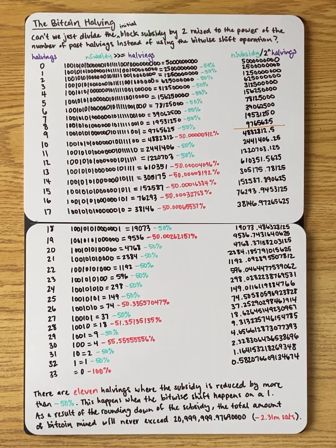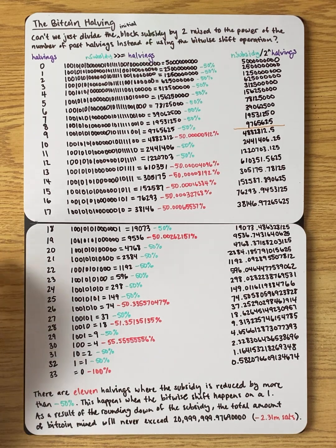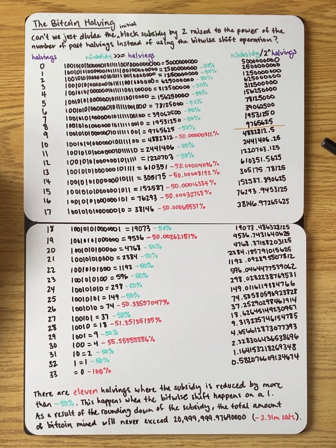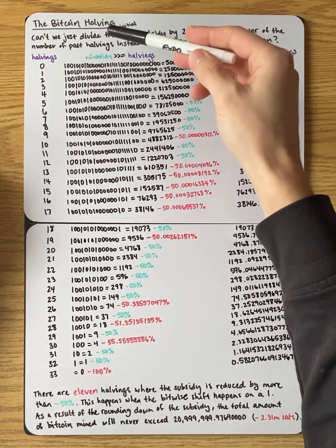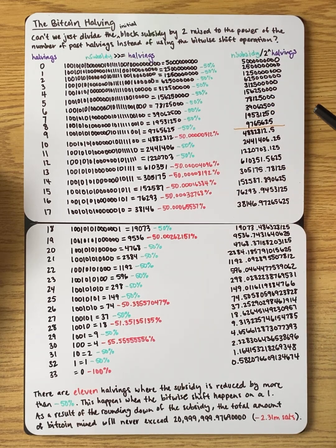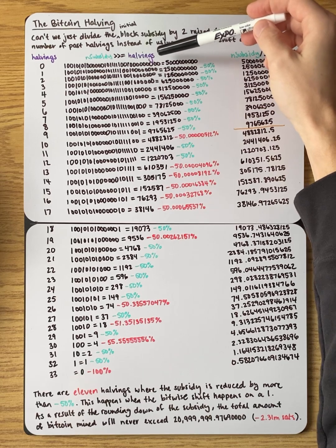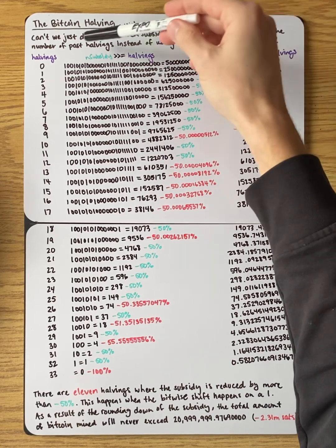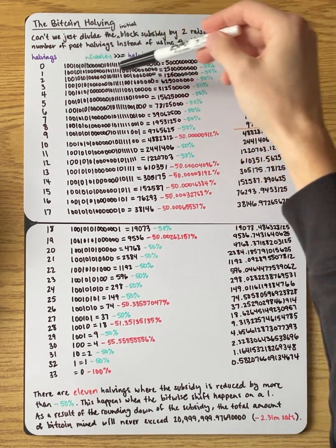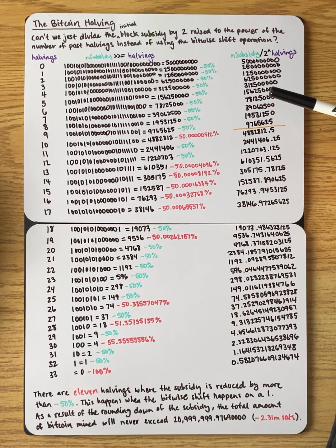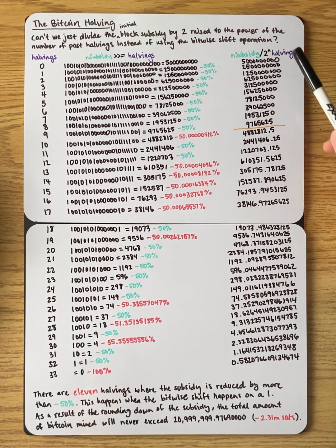I want to talk about the Bitcoin halving again. I got a question from the last video asking about the bitwise shift function — specifically, why can't we just divide the initial block subsidy by two raised to the power of the number of past halvings, instead of using the bitwise shift operation? It's an interesting question because it's a strange piece of code — why would we choose the bitwise function instead of something maybe a little bit easier to comprehend, like just dividing by two raised to the power of the halvings?